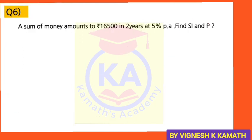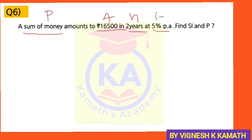A sum of money amounts to Rs. 16,500 in 2 years at 5% per annum. Find SI and P. The question asks us to find SI and P. A sum of money — that is P — you don't know the value of P. It amounts to 16,500, so that is A after 2 years; N = 2. R is given as 5%, so I = 5 divided by 100 = 0.05.